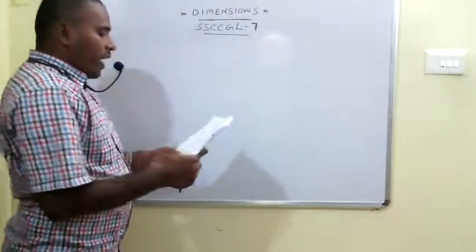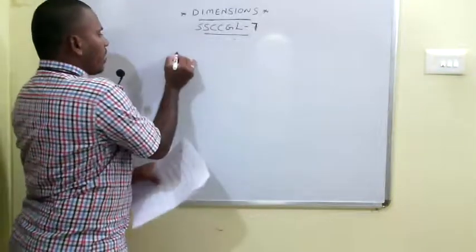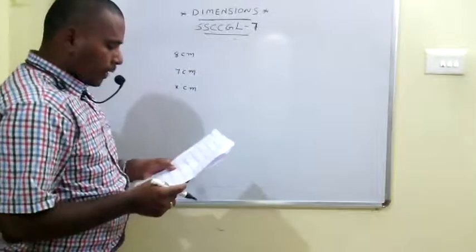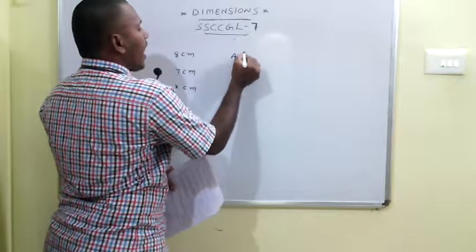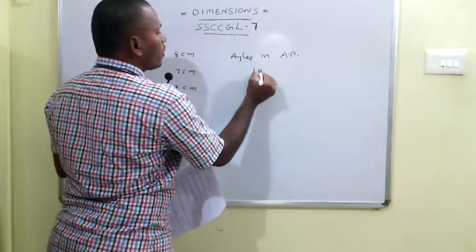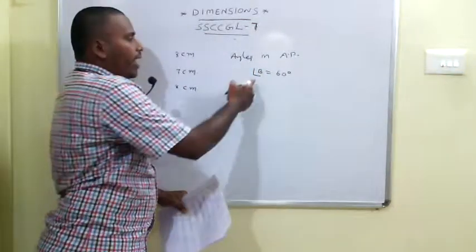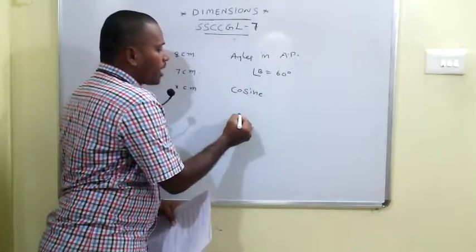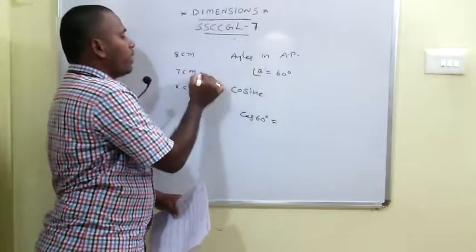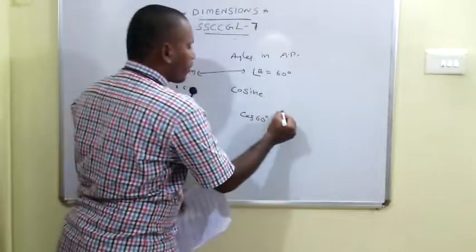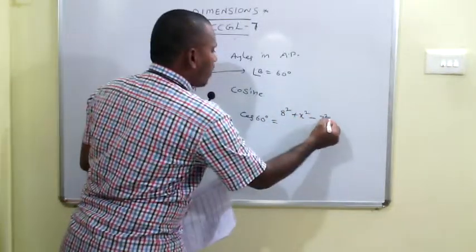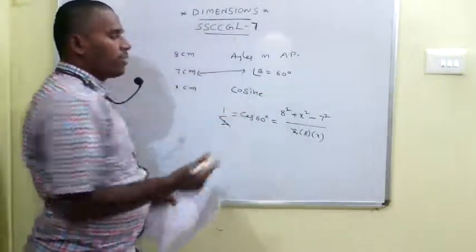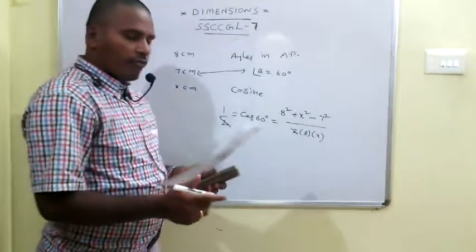The 63rd problem: In a triangle, the lengths of the larger sides are 8 cm and 7 cm, with the third side X cm unknown. The angles are in arithmetic progression, so the middle angle B = 60 degrees. Applying the cosine rule: cos 60° = (8² + X² - 7²) / (2 × 8 × X). Since cos 60° = 1/2, on simplification we get a quadratic, giving X = 5 or 3 cm.